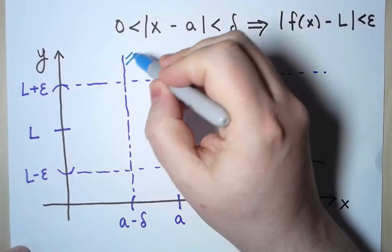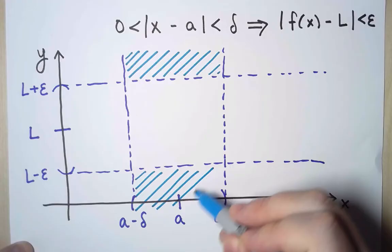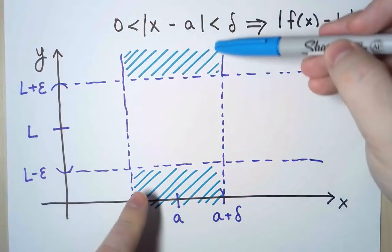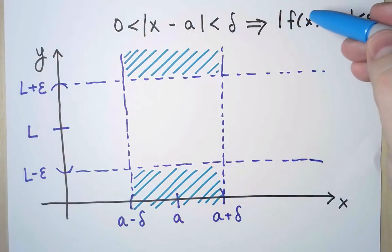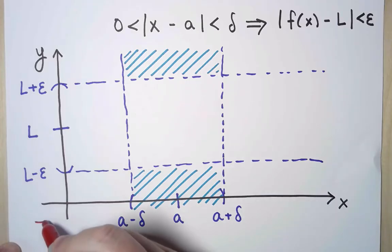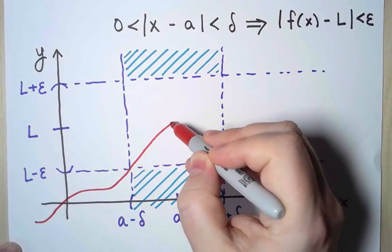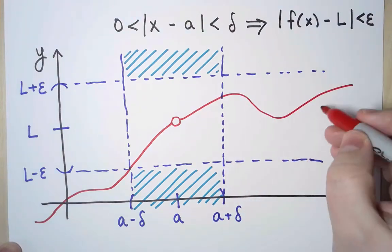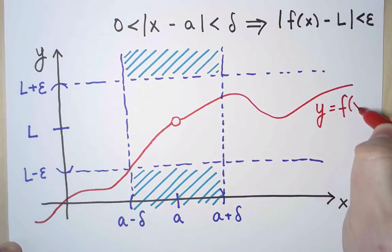As long as I avoid these two regions, I will satisfy the implication. Notice that for other values of x, there are no constraints, and f can be anything. For example, the function with this graph satisfies the implication for the specific value of ε and the specific value of δ that I chose in the picture.